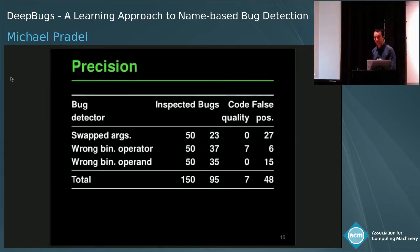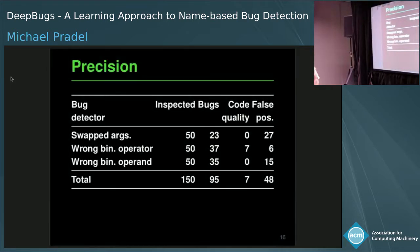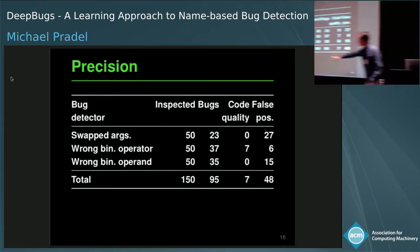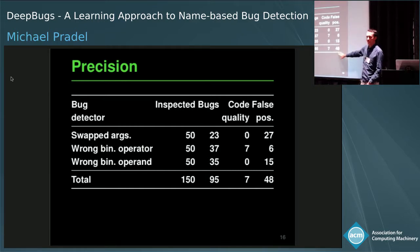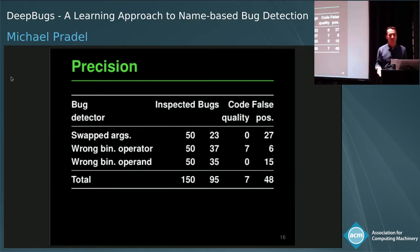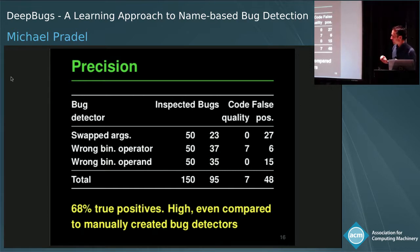Precision: for each of the three bug detectors, we inspected the top 50 warnings — 150 warnings in total — and manually classified them as bugs, code quality problems, or false positives. 102 out of 150 warnings point to something developers want to change, most being correctness bugs, giving an overall 68% true positive rate. This is high compared to manually created bug detectors, and particularly nice because we didn't add heuristics to remove false positives — it's all learned automatically.